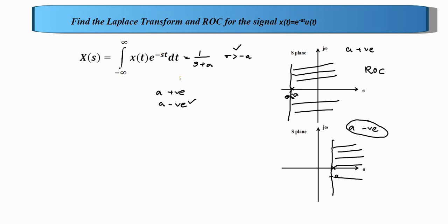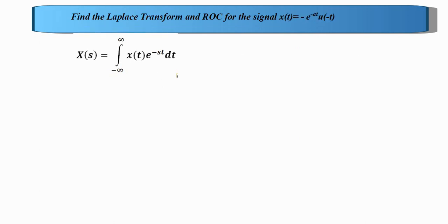This was the causal signal. Now we discuss the anti-causal signal, which is the second question. The signal is minus e raised to minus at into u of minus t. We write the Laplace transform equation as the integral from minus infinity to infinity of minus e raised to minus at into u of minus t into e raised to minus st dt. There is a non-trivial signal u of minus t.